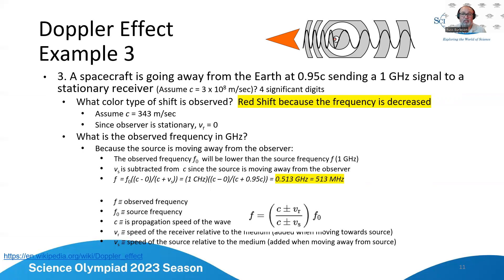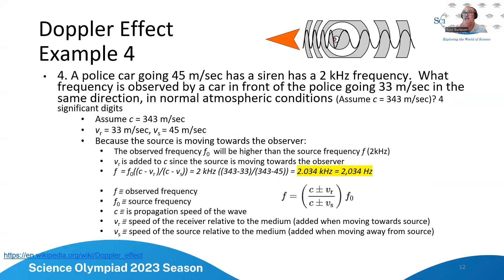For the police car example, since the police car is catching up on the person that's driving in front of the police car, we expect the observed frequency to be higher. But we've actually got sort of two things playing against each other. On one case the police car going forward at 45 meters per second means the frequency is going to be higher but the observer driving away is going to actually decrease the frequency. So you will notice that this one we're actually subtracting from both the top and the bottom and we come out with 2.034 kilohertz or 2034 hertz. So we see an increase but not as much as we would have expected had the car in front been stationary.